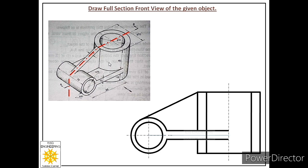When we cut this object along the center line and remove the front half, this edge is completely removed. For the horizontal plate, only the length between the two cylindrical parts will be visible to us, so we remove the outer edges of the plate because the material of this plate merges with the material of the second cylindrical part.